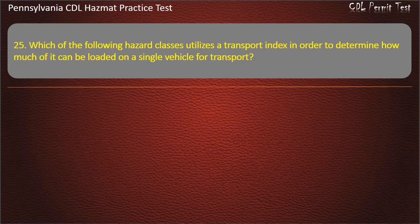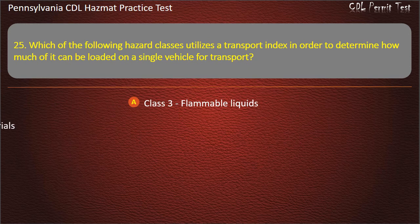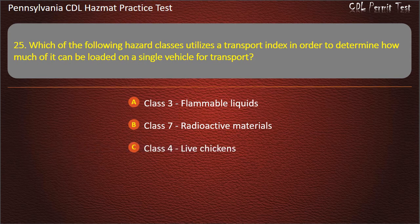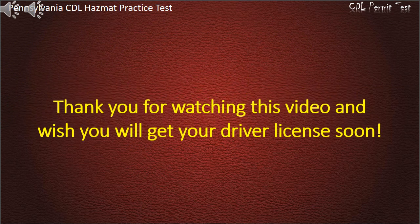Question 25. Which of the following hazard classes utilizes a transport index in order to determine how much of it can be loaded on a single vehicle for transport? Options: Class 3 Flammable liquids; Class 7 Radioactive materials; Class 4 Live chickens; Class 1 Explosives. Answer: Class 7 Radioactive materials.